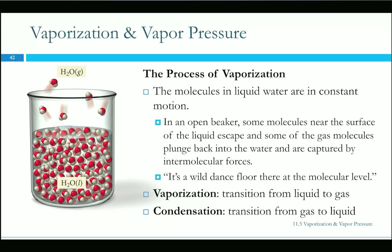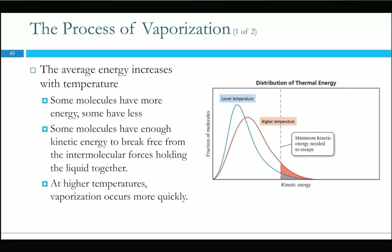For any liquid, the temperature represents the average kinetic energy — the average speed of the molecules. There's an escape energy: the amount of energy required for a liquid molecule to break free and become a gas. When we increase temperature, we increase average kinetic energy, and some molecules at the high end of the energy distribution have enough energy to escape. As temperature increases, more and more molecules are pushed past that threshold. Increasing temperature increases the rate of vaporization.